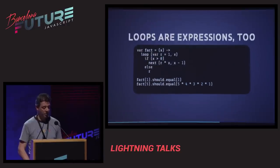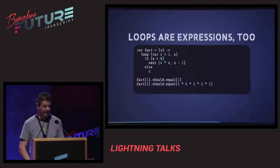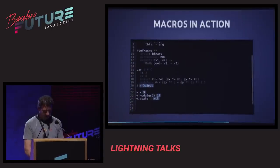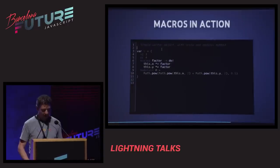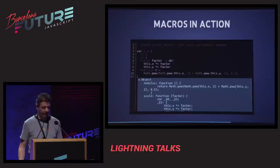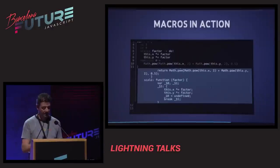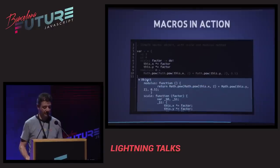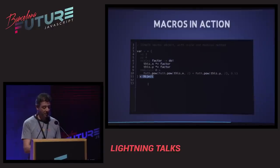Loops are also expressions. This is the classical example of a factorial which looks like a recursive function but is translated into a loop. Here we have macros in action — this is a recording of live coding with our editor and environment. You can look at objects. This is a simple object with a couple of methods — it's a vector. There's the modulus, which is the length.